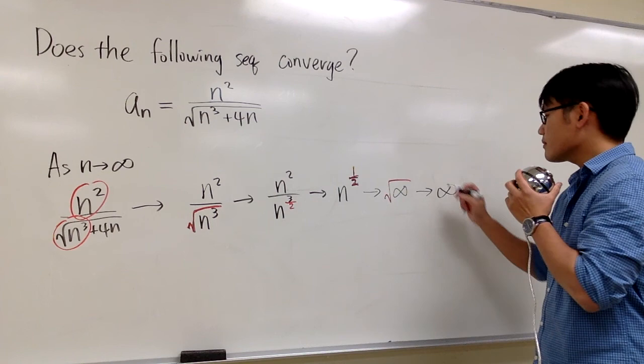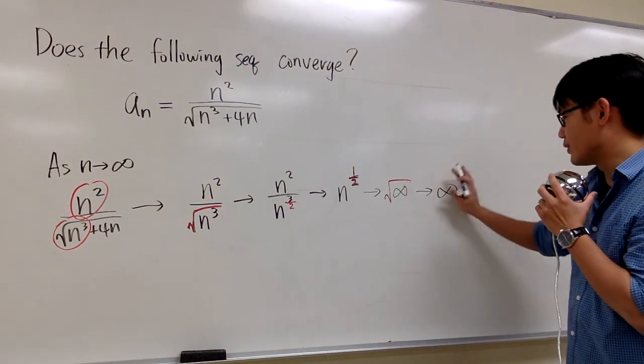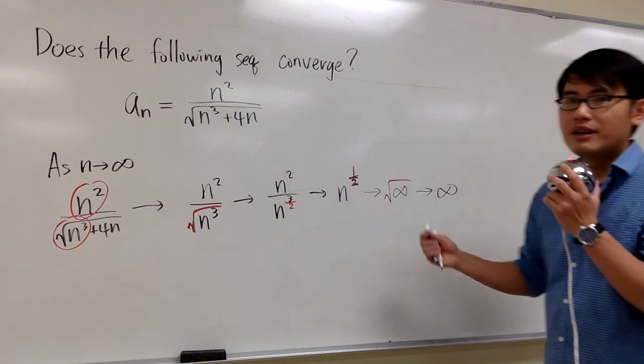Therefore, you see that √∞ diverges to infinity. So the limit here is infinity.